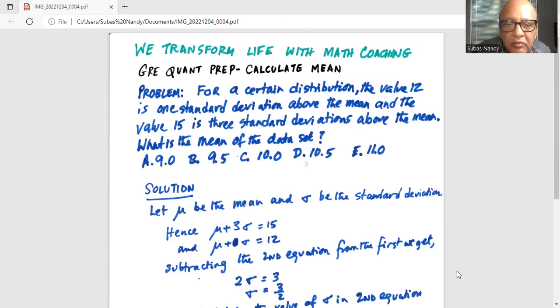So from the given information, mu plus three sigma, because the number 15 is three standard deviations above the mean. So mu plus three standard deviations is equal to 15, and the number 12 is one standard deviation above the mean. So mu plus sigma equals 12.